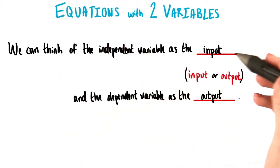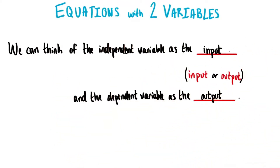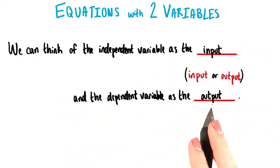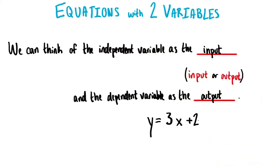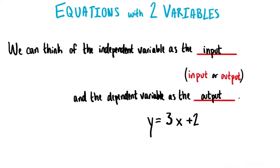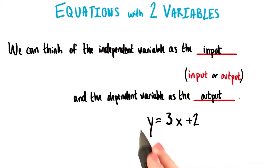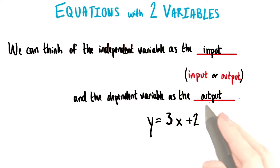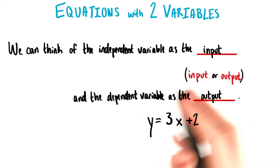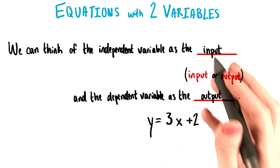We can think of the independent variable as the input and the dependent variable as the output. So in an equation like y equals 3x plus 2, the input will be whatever number we plug in for x. And the output is the number that we get for y by using that value of x. The output depends on the input.